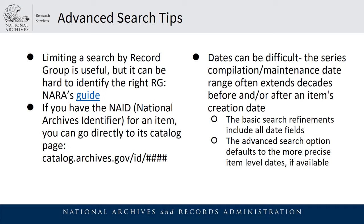Dates can be difficult. The compilation/maintenance date range for the parent series often extends decades before and/or after the creation dates for the individual items contained in that series. If you use the basic search refinements, that will include all the date fields including the longer range. If you use the advanced search option, it will default to the more precise item-level date such as creation date if such a date is available. I also wouldn't recommend starting with a date range due to this ambiguity and the existence of multiple date field types such as creation date, broadcast date, coverage date, and the compilation/maintenance date.